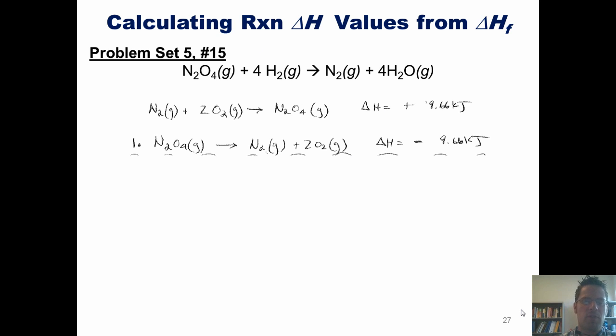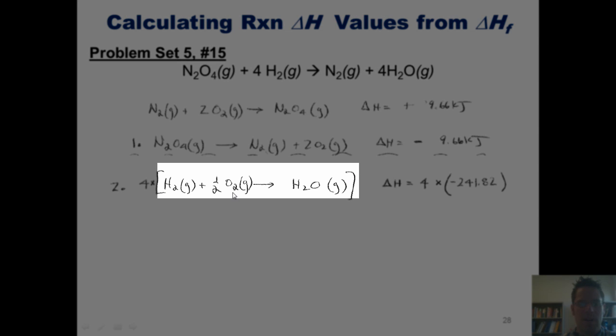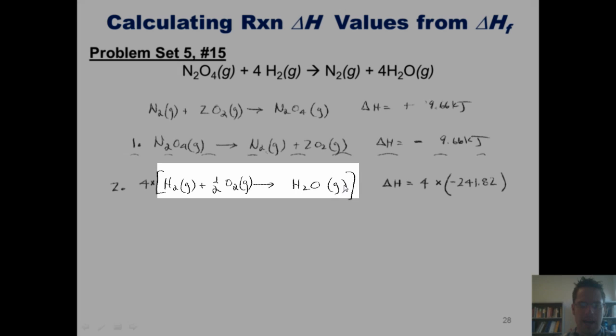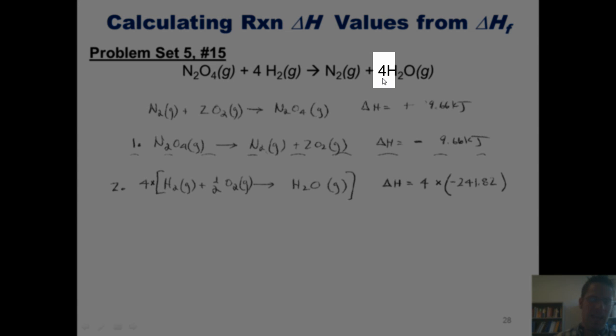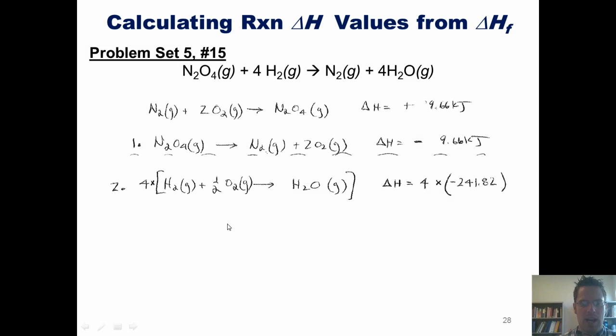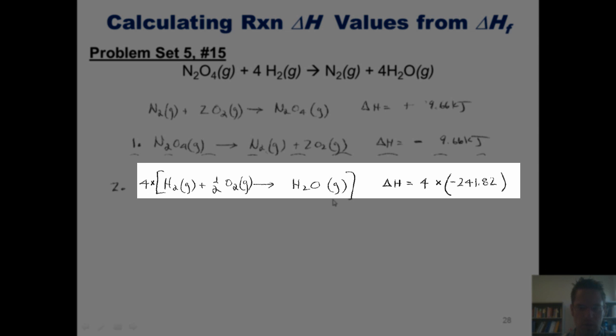Looking up the formation of gaseous water, Appendix C gives me this equation: H2 plus one-half O2 forming H2O gas. Because there's a coefficient 4 in front of the H2O gas on my product side, I have to multiply the entire equation by 4. The accompanying enthalpy value, negative 241.82, also has to be multiplied by 4.